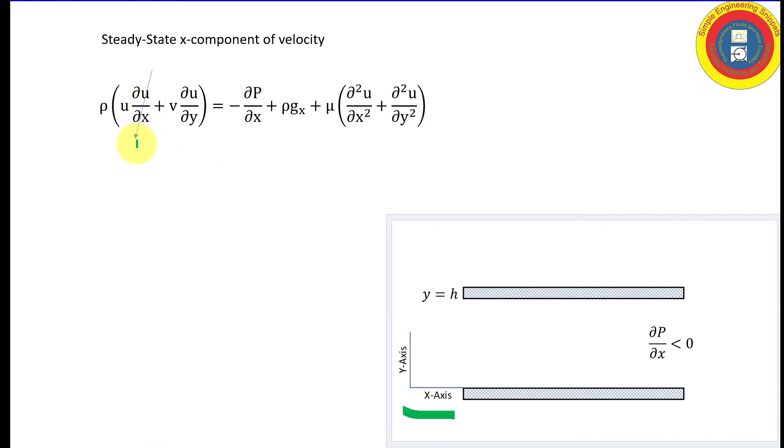And let's go through and simplify this equation. Well, it's fully developed flow, so nothing is changing in the x direction. We only have flow in the x direction, so the y component of velocity is equal to zero. And there is no gravity in the x direction. And again, things are not changing in the x direction. The flow is fully developed. And that leaves us with this equation where we have the dynamic viscosity times the second derivative of the x component of velocity with respect to y is equal to the pressure gradient. So I can integrate that twice. We see two constants of integration.